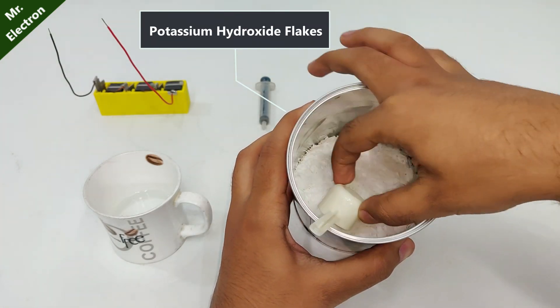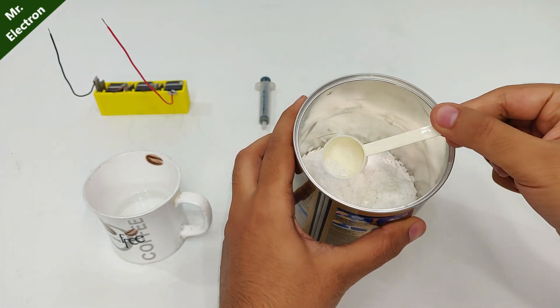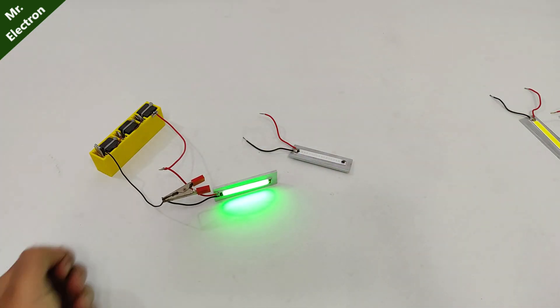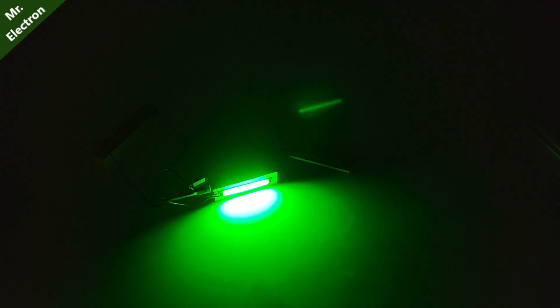Now, the solution that I have used is potassium hydroxide and I got this idea because I have been working on aluminum air batteries for a few weeks.